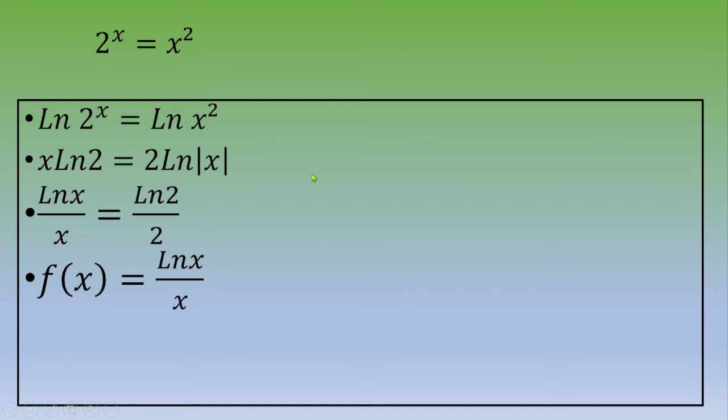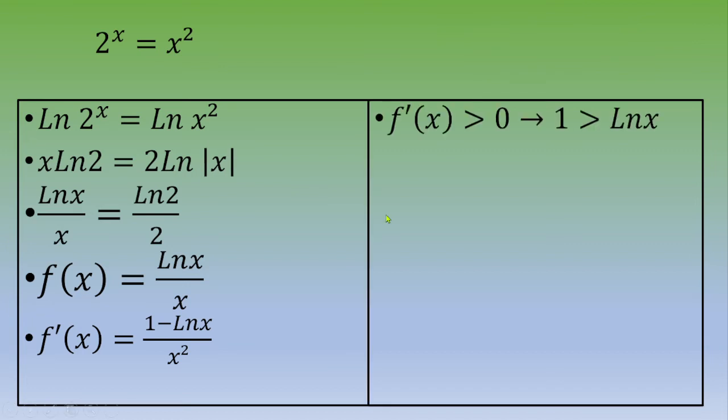Then, thanks to this rule of derivatives (u/v)' = (u'v - uv')/v^2, you can calculate the derivative of f and you end up with f'(x) = (1 - ln(x))/x^2.